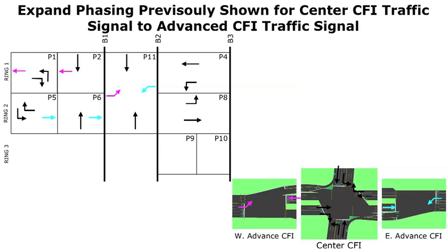The timing is based on travel time between locations and how we're calculating the advanced distance. On phase 9, the advanced left turn movement is still working, but this time with movements approaching away from the center CFI. Looking at phases 4 and 8, I'm starting the eastbound and westbound through movements on the CFI approaches but still running the advanced left turn movements, because those through movements will not have reached the advanced CFI traffic signals yet. So phase 9 will also be a known time.